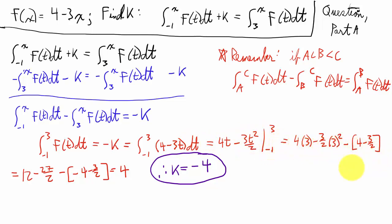Plugging everything in, just do your algebra, we get 4. So that means k is negative 4, because remember all this, this 4, was negative k.